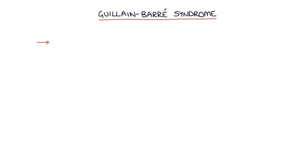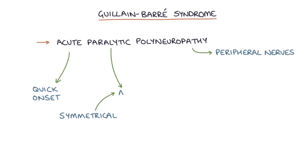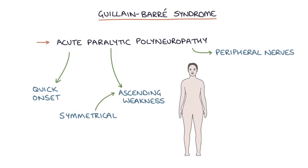Guillain-Barré syndrome is an acute paralytic polyneuropathy that affects the peripheral nervous system. It causes an acute, meaning quite quick, onset, symmetrical — affecting both sides equally — ascending weakness, so weakness that starts from the feet and moves upwards.